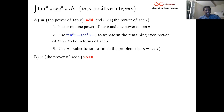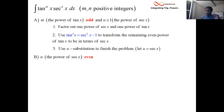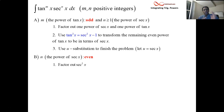Now, next level: what do you do when the power of secant is even? In the same format, we're going to factor something out. Even means two, four, six. So if the power of secant is four, what we're going to do is factor out two powers of secant.